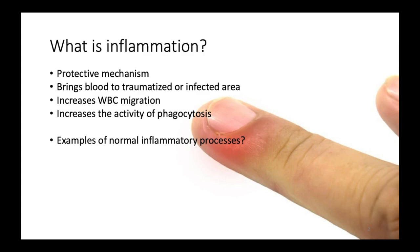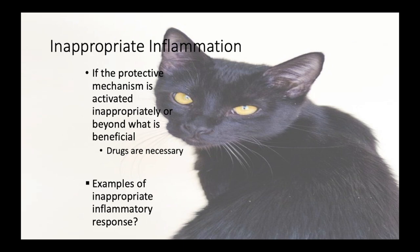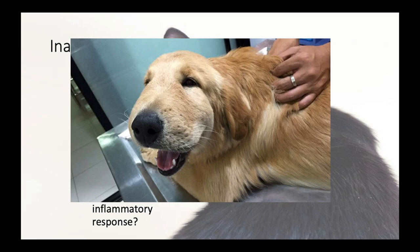Normal inflammation creates migration of white blood cells and phagocytosis to help with healing. Inappropriate inflammation is when the protective mechanism is activated beyond what is beneficial — this is where a doctor would step in with medication. Examples include chronic arthritis, severe allergic reactions, autoimmune diseases, and vaccine reactions. In these cases the animal's immune system goes into overdrive, creating a huge inflammatory response for something fairly minor.